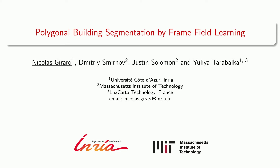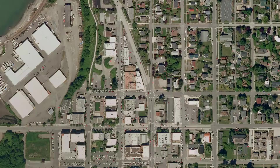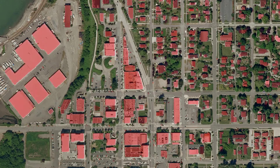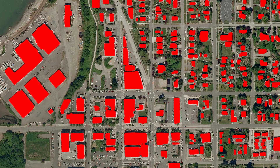Our goal is to automatically extract buildings from overhead images in order to create or update maps of buildings. A common method is to use a segmentation neural network to predict a building probability for each pixel of the input overhead image.